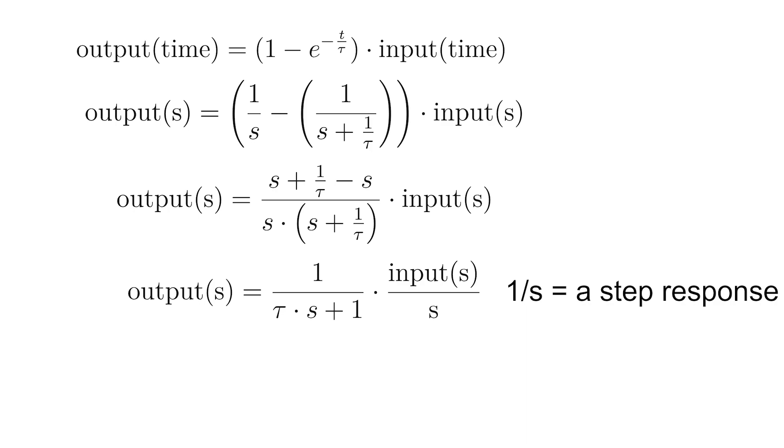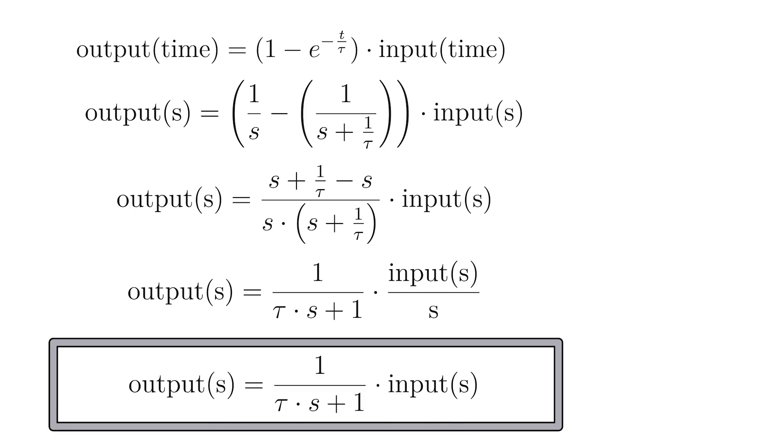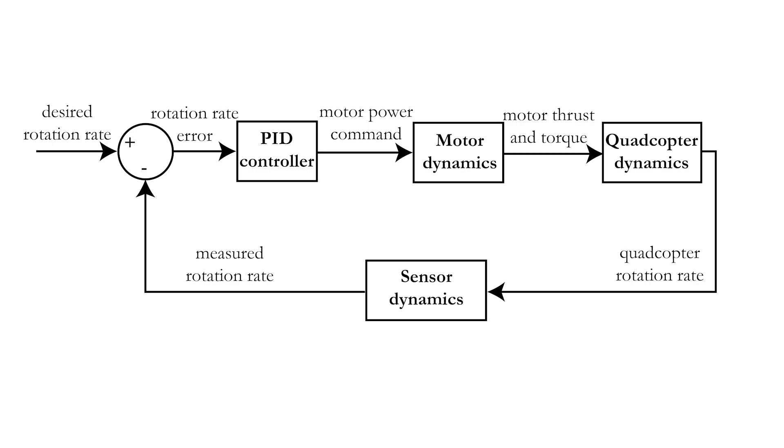so by deleting the one divided by s, you get the final transfer function for a first order response. For our motor and propeller combination, tau was equal to 0.03 seconds, which allows us to characterize the motor dynamics in our control loop diagram by a very simple equation in the frequency domain, as illustrated on the screen.